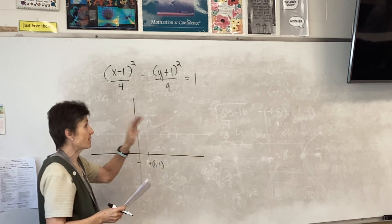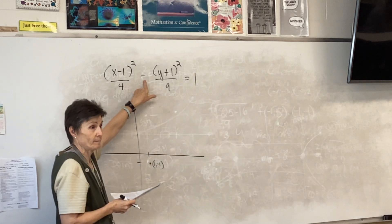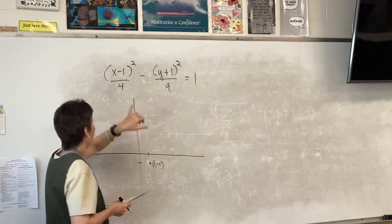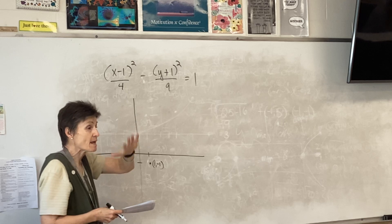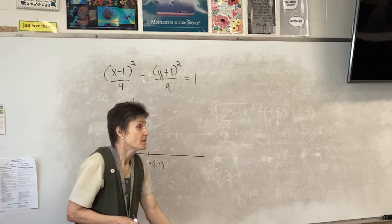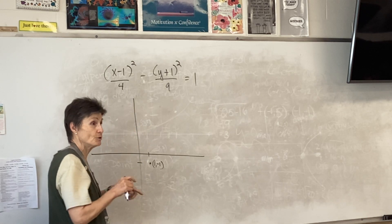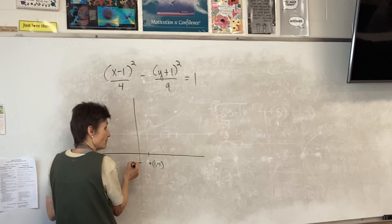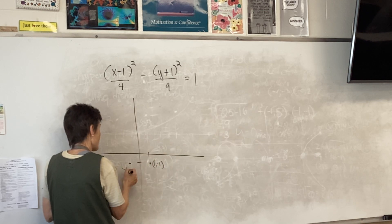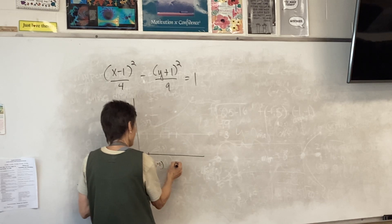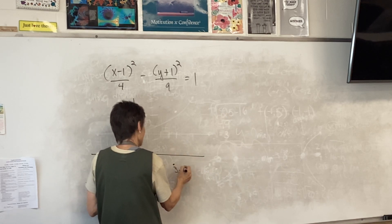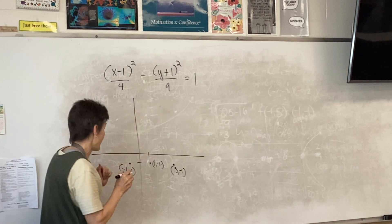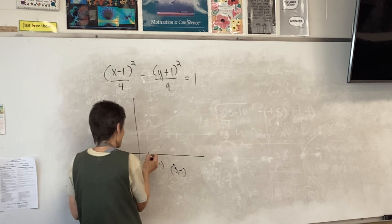Just like it is — if that had been a plus sign, this could have been your quiz question, and the center would have been at one, negative one. What do the four and the nine tell me? Same as before: the four and the nine tell me how far to count. Four means I'm going to count two in the horizontal x-direction, and nine tells me I'm going to go up and down three from my center.